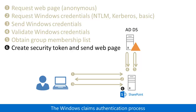The security token service on the SharePoint server then creates a claims-based security token and stores it with the distributed cache service on the SharePoint farm. Claims in the security token are based on the Windows security token and the group membership of the user account.